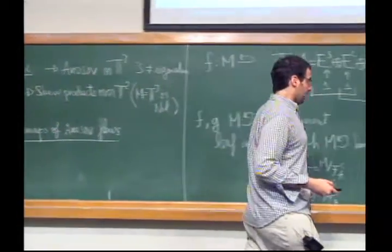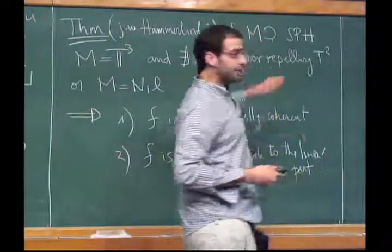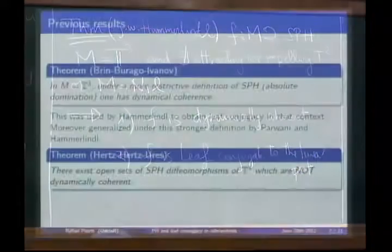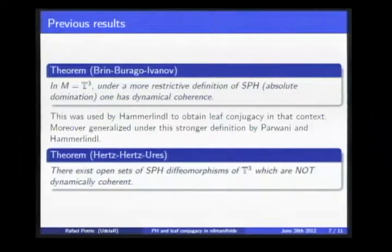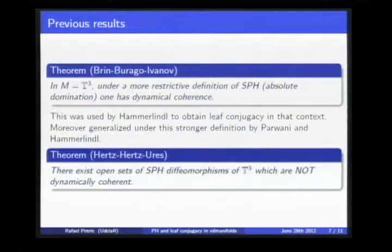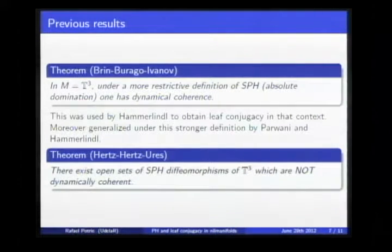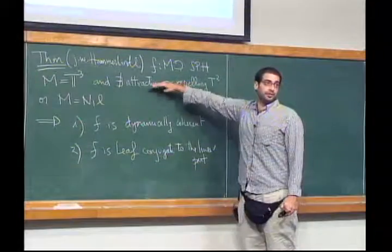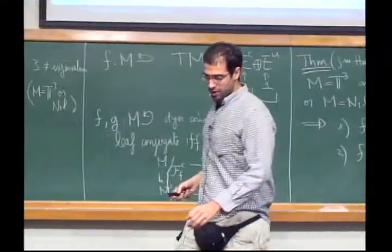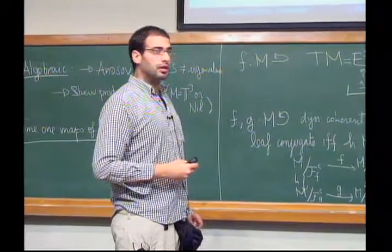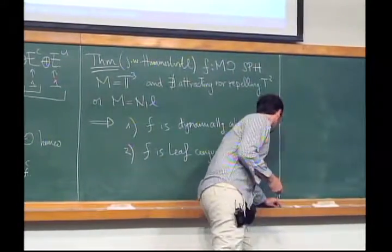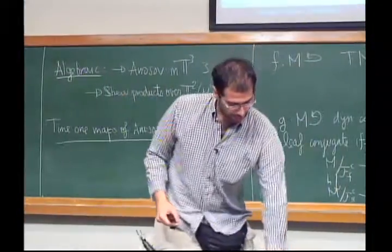However, in the general strong partially hyperbolic case this hypothesis cannot be removed. There is a recent example by Jana Rodriguez Herz, Federico Rodriguez Herz and Raúl Ures which shows an open set of partially hyperbolic systems which are not dynamically coherent in the three-torus. Of course, they do not admit a stronger notion of partial hyperbolicity, but they form open sets and cannot integrate into foliations — in fact, they have either attracting or both attracting and repelling tori, and the leaves branch.